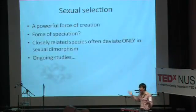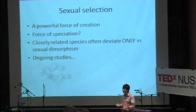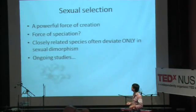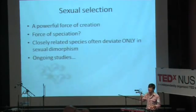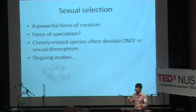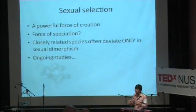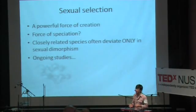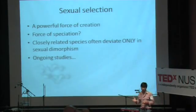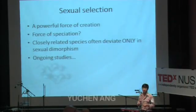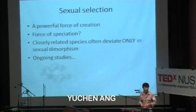So what I can say is sexual selection is a very, very powerful force of creation. People have suggested that this is actually a main force of speciation, as a part of natural selection. What studies have actually observed is that very closely related species only deviate by sexual characters most of the time. There are many ongoing studies to see whether sexual selection is the actual driver for speciation in the diversity of animals we see today. Thank you.